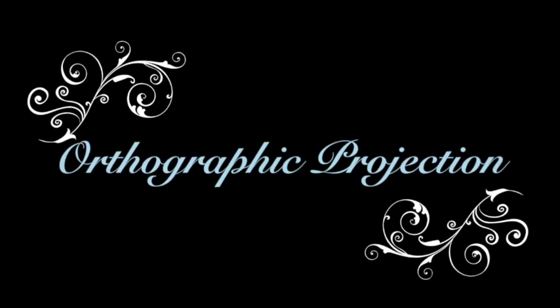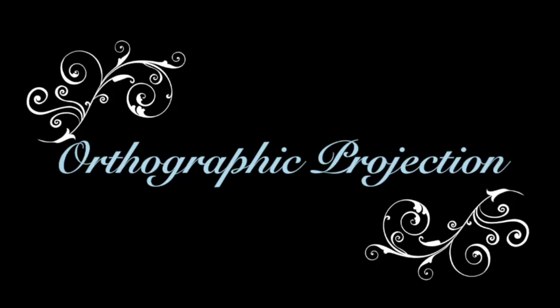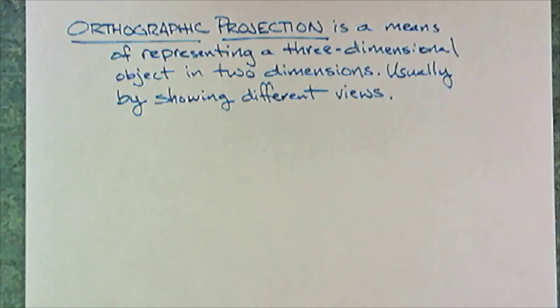Today we're going to be talking about orthographic projection. I'm going to start off with the definition. An orthographic projection is a means of representing a three-dimensional object in two dimensions. That sounds familiar to one-point and two-point perspective. The difference here is it's usually shown by showing different views at the same time.